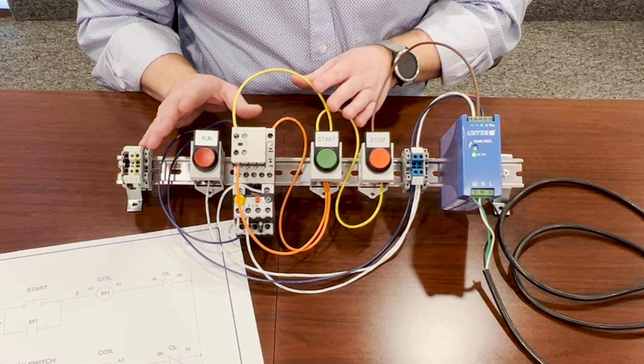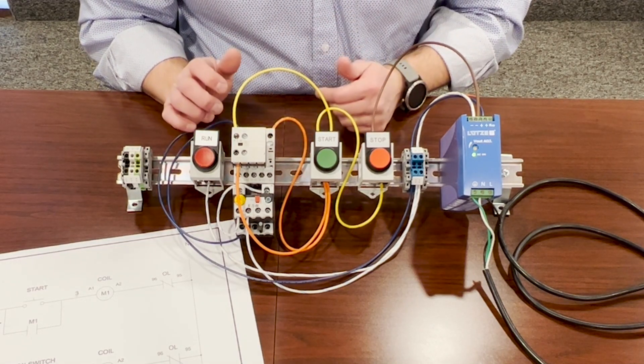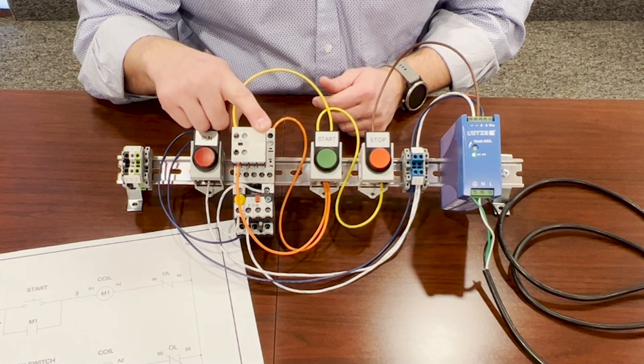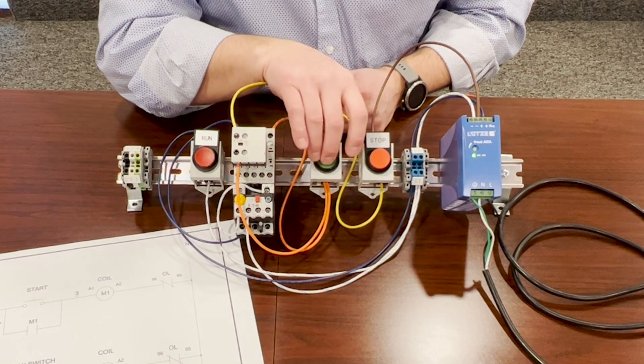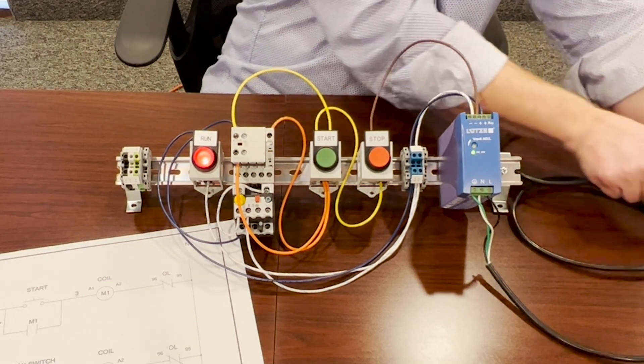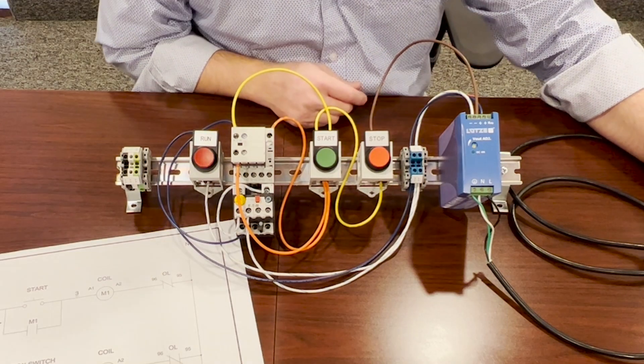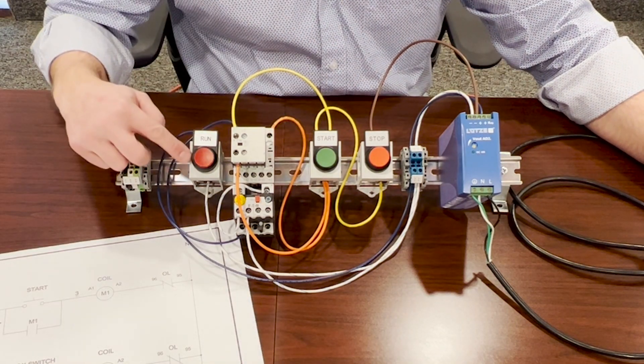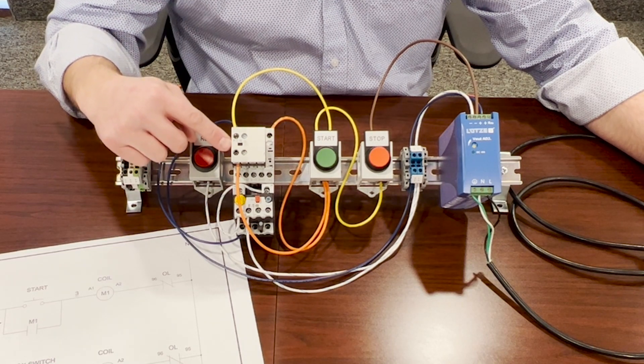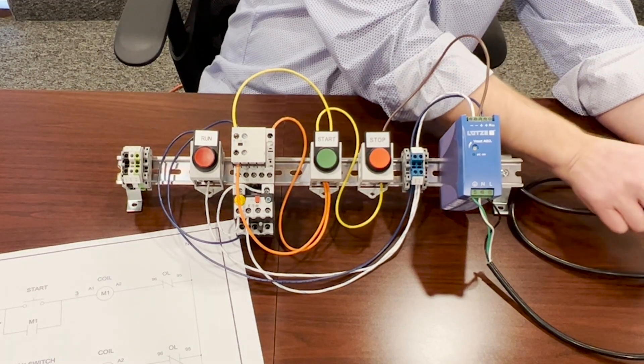The beauty about this circuit is in case of a power outage, this will not come back on automatically. So if we start this back up and then we're going to unplug or disconnect, just like if the power was removed, and you can see our light turned off. That means that this contact is open, because the motor starter is de-energized.